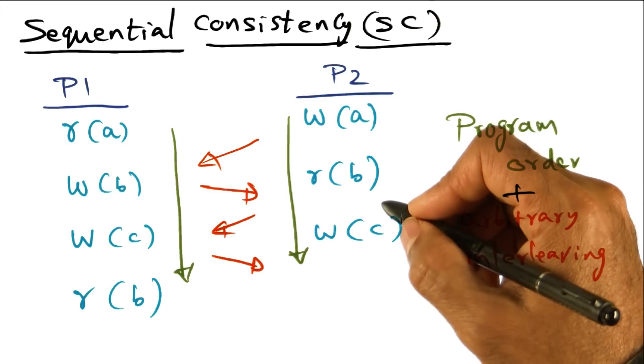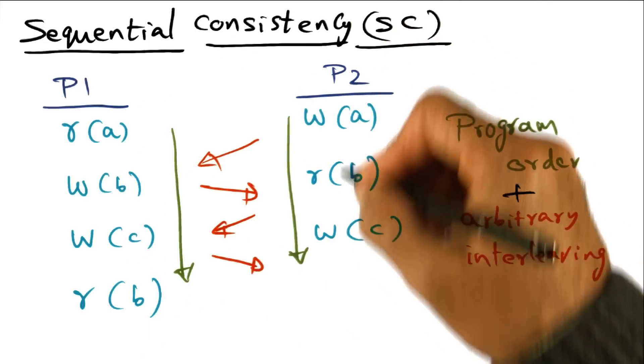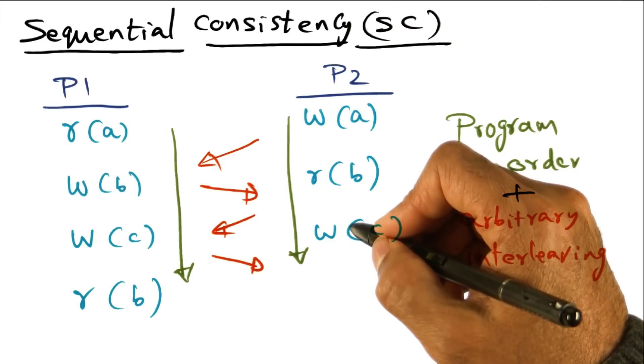Now, the real question is, what happens to the accesses that are happening in one processor with respect to the accesses that are happening on another processor?